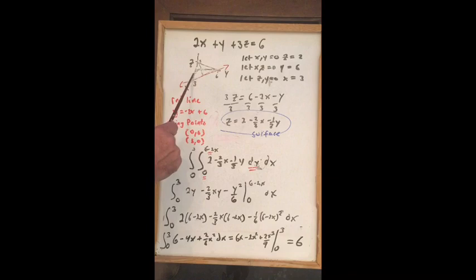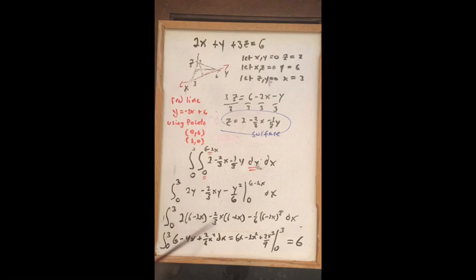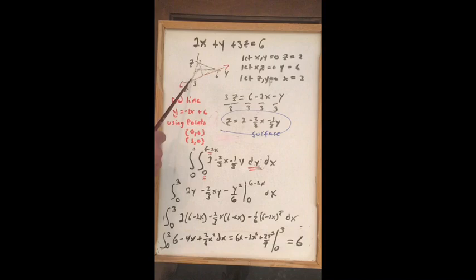y will go from 0 up to the red line (6 - 2x), and x will go from 0 to 3. We get the double integral from 0 to 3 for x, 0 to 6 - 2x for y, integrated over the surface z = 2 - (2/3)x - (1/3)y. Calculating this integral with careful algebra gives 6 as the answer. The hardest part of this problem is visualizing the surface; using software like Maple to draw it may help.